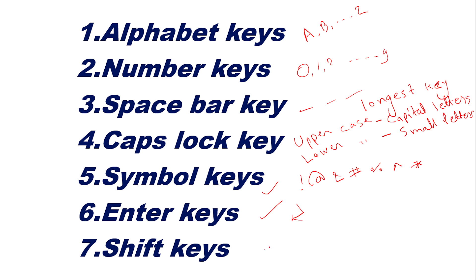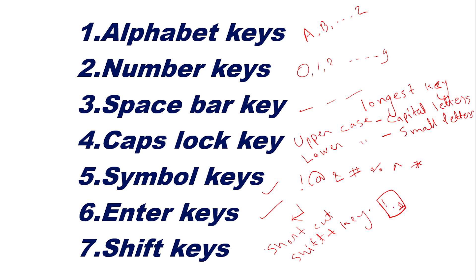Shift key is used to create shortcut keys. An important quality of the shift key is that if you want to type any symbol, you have to press shift plus the symbol key. For example, the exclamation sign is on the number one key — if you want to type it, press shift plus number one.